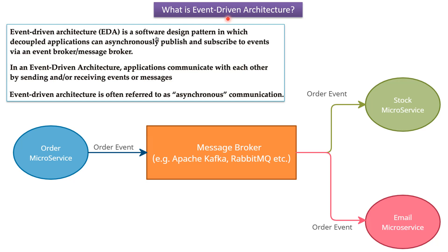In this video tutorial I will explain what is event-driven architecture. Event-driven architecture is a software design pattern in which decoupled applications can asynchronously publish and subscribe to events via an event broker or message broker. In event-driven architecture, applications can communicate with each other by sending or receiving events or messages.